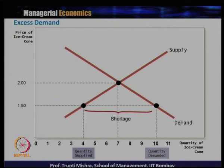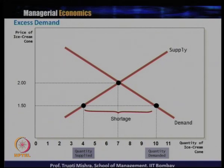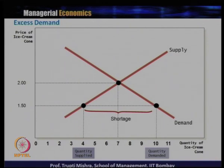The second graphical situation is excess demand. The price has decreased from the equilibrium price of 2 rupees to 1.5 rupees. Less is the price, more is the demand — at 1.5 rupees, quantity demanded is 10 units. Supply decreases from 7 units to 4 units because less is the price, less is the quantity supplied. The gap between 4 units of supply and 10 units of demand leads to a shortage. To return to equilibrium, suppliers will increase the price, which increases quantity supplied and decreases quantity demanded, eventually restoring equilibrium.